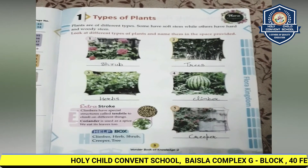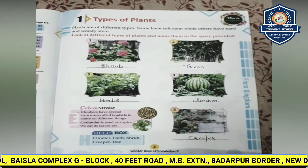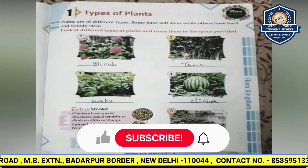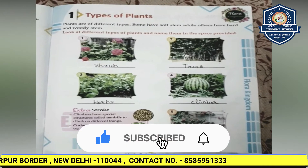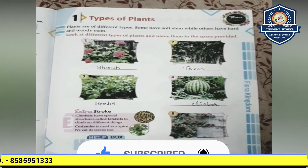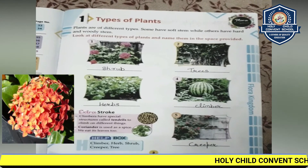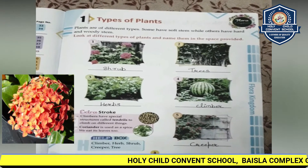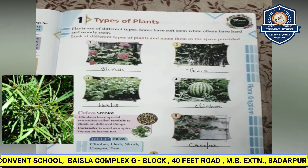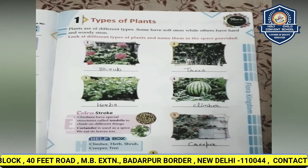Today we will study about different types of plants. Plants are of different types — some have soft stems while others have hard and woody stems. First of all, let us study about shrubs. In Hindi we call them 'jhadi.' Shrubs are woody plants with multiple stems and are generally smaller than trees.